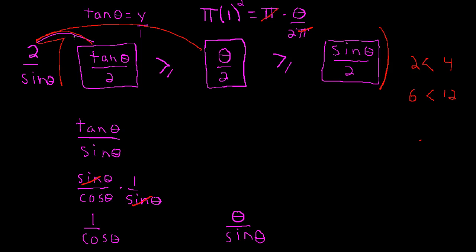For the last term, 2 over sine of theta times sine of theta over 2 is just 1 — everything drops out. So the relationship is maintained: 1 over cosine theta is greater than or equal to theta over sine of theta, which is greater than or equal to 1.